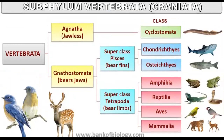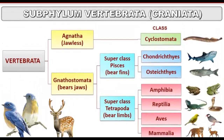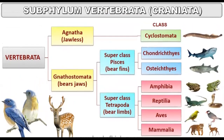Now let us understand the classification of sub-phylum Vertebrata further. Vertebrata is divided into two parts: Agnatha, meaning jawless vertebrates — no jaws present in the mouth, with a sucking-type mouth — and Gnathostomata, meaning animals that bear jaws. Under Agnatha, there is only one class: Cyclostomata.